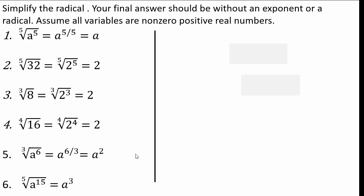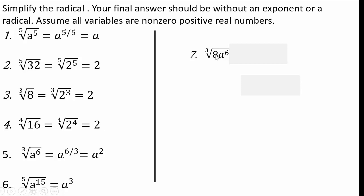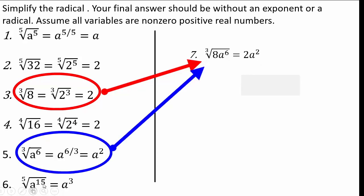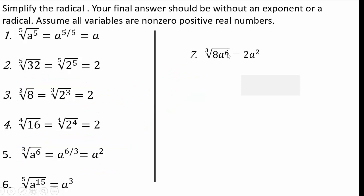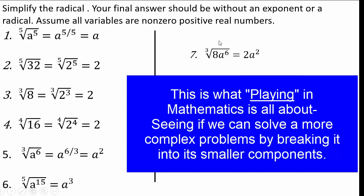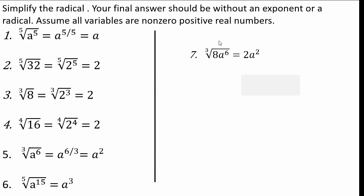Let's try a few more. Now we have two things happening — remember, when there's no sign in the middle it's multiplication. 8 is 2 to the 3rd. Cube root of 2 to the 3rd we already did — that's 2. Cube root of a to the 6th is 6 thirds, which is a squared. So cube root of 8 is 2, and cube root of a to the 6th is a squared. The answer is 2a². Remember: when you have a product raised to a power, you can take the power of each factor separately.